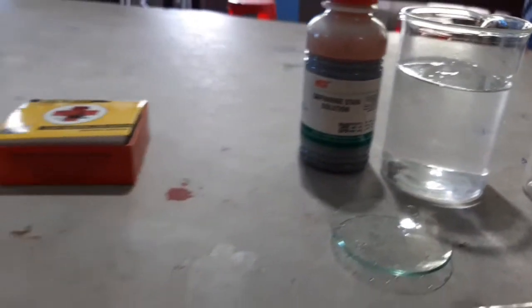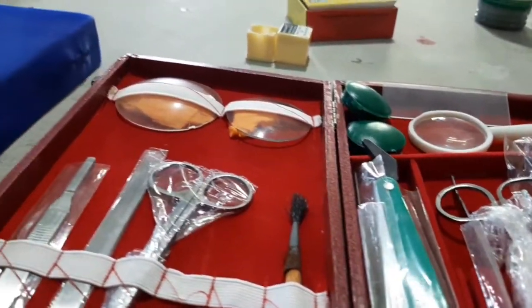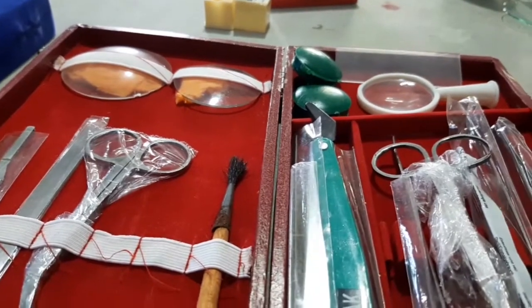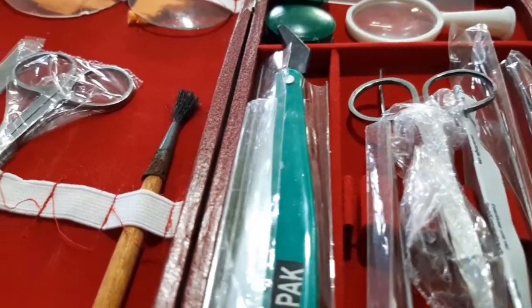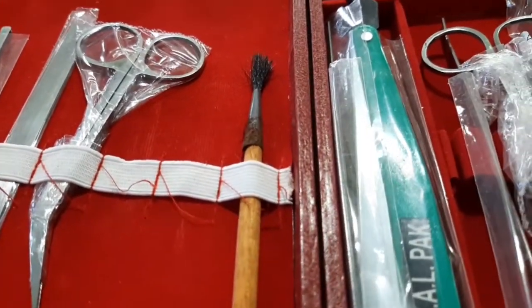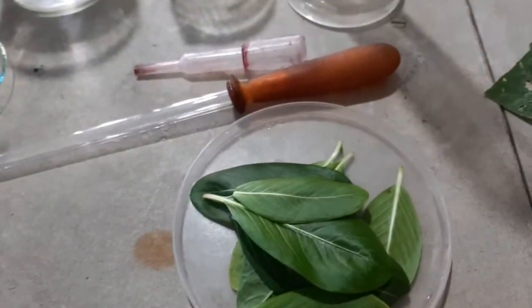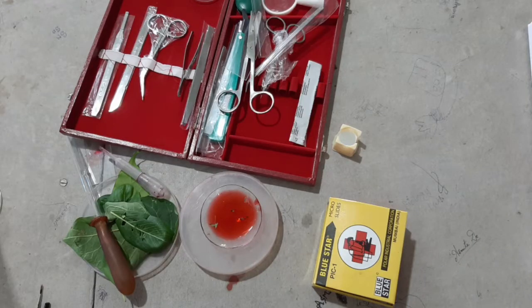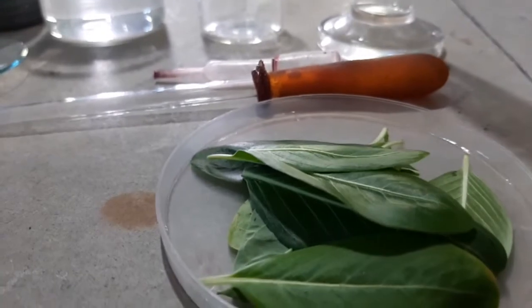And a dissection box. You don't need all the apparatus from the dissection box, you need only the forceps for bringing out the epidermal layer from the leaf surface and the brush. So let's perform the activity. At first, you select a freshly plucked leaf and then you take out or peel out the epidermis from this leaf with the help of a forcep.